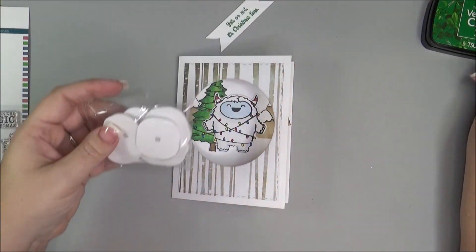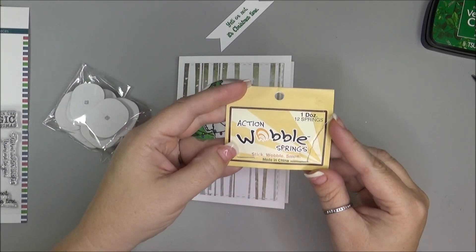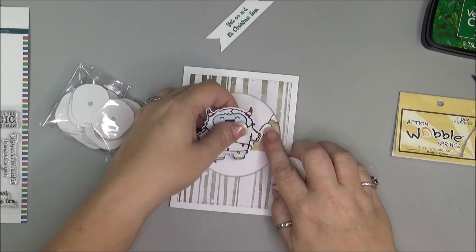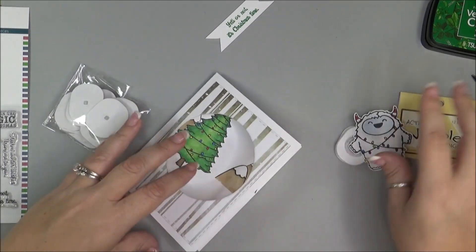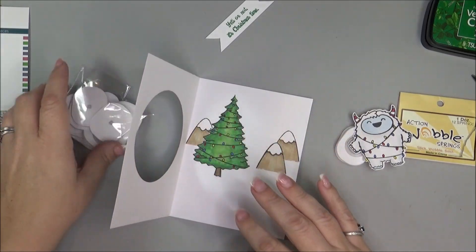And then next, I am going to use these little wobblers. Action Wobbler Springs. And I will put all the links below in the description box of all the products that I am using.